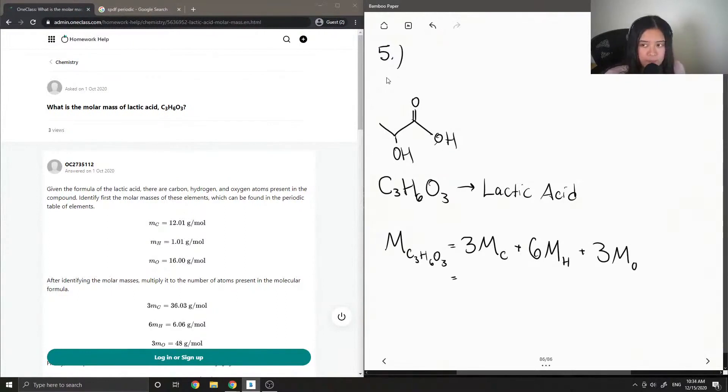So again, from the periodic table we can find their different atomic masses. So the molar mass of carbon is 12.01 grams per mole. The molar mass of hydrogen is 1.01 grams per mole. The molar mass of oxygen is 15.99 grams per mole.